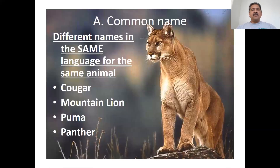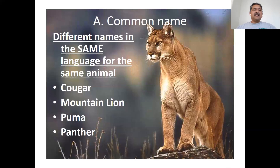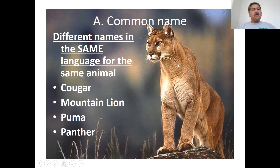To make that even worse, in the same language there might be different names for the same animal. This animal here is called a cougar, or a mountain lion, or a puma, or a panther — it just depends on what part of the country you're coming from. So this animal, even in English, has multiple names.